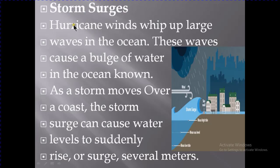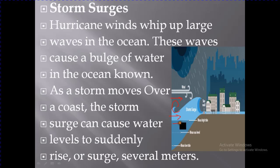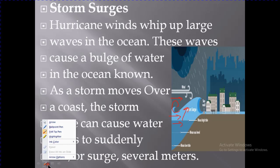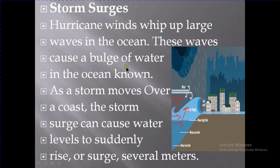Storm surge: hurricane winds whip up large waves in the ocean. As you can see in this figure, these are the winds that move in this way. The water in the ocean gets whipped and starts to move upward, as you can easily see from this side, causing a bulge of water in the ocean.